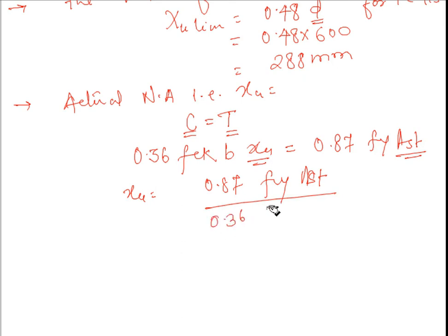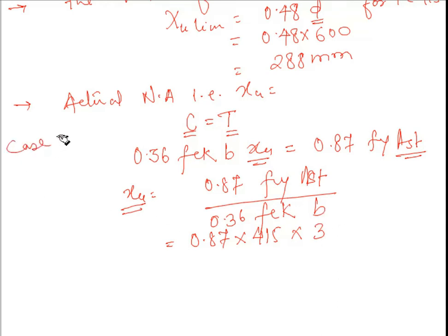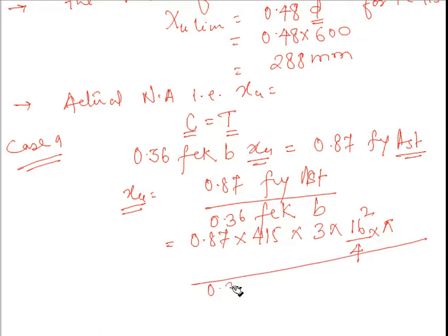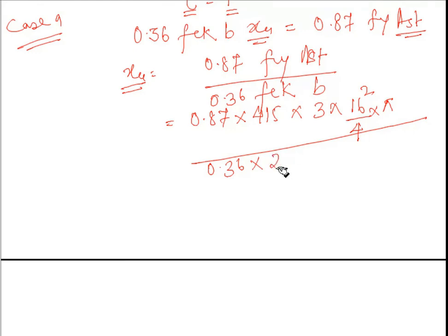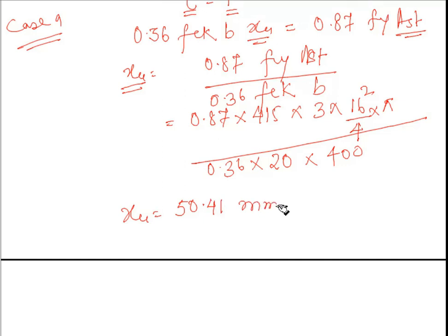For Case A — three numbers of 16 mm diameter bars — with fy = 415 N/mm², fck = 20 N/mm², and b = 400 mm, Ast = 3 × (π/4) × 16². Substituting, Xu = 50.41 mm, which is much less than Xu,lim = 288 mm. Therefore the condition is satisfied and we have an under-reinforced section.